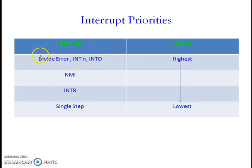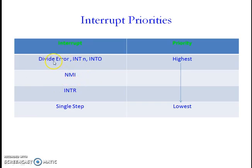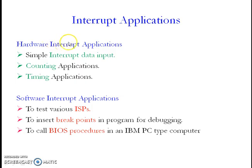In scenario one, when divide-by-error and INTR interrupts occur simultaneously, the 8086 first executes the divide-by-error ISR because it first checks for internal interrupts; after completion it executes the INTR input. In scenario two, when divide-by-error and NMI occur simultaneously, even though divide-by-error is an internal interrupt it cannot be disabled, so the processor must first respond to NMI. After executing the NMI ISR, the divide-by-error ISR gets executed.